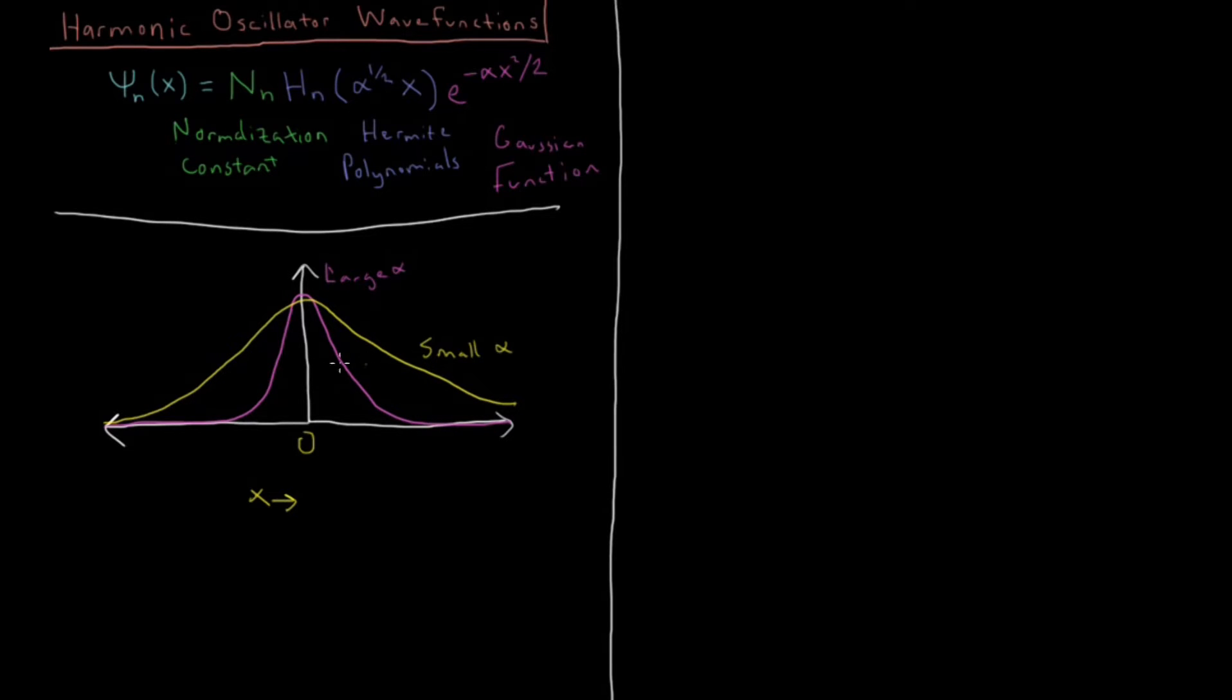So if this alpha is very small, we're going to get a very diffuse, very spread out particle. If this alpha is large, we're going to get a particle which is very contracted and very squished into a small space.